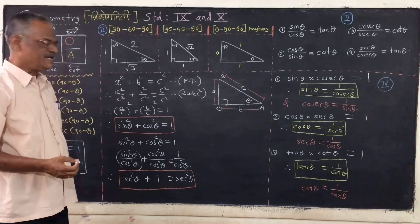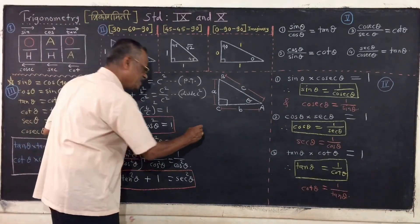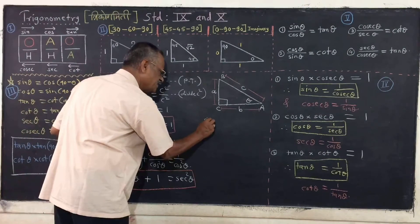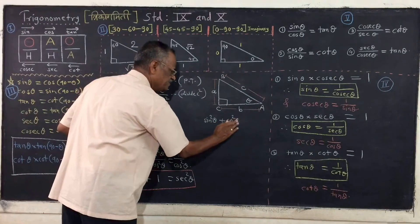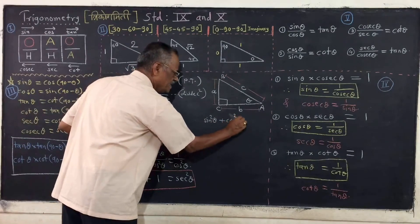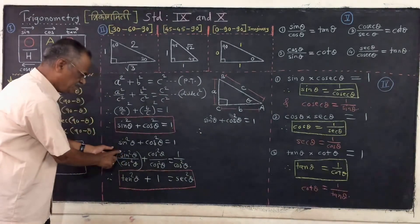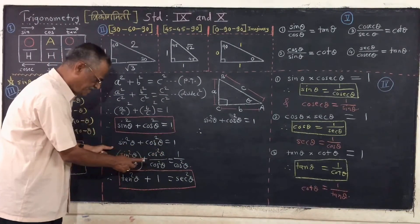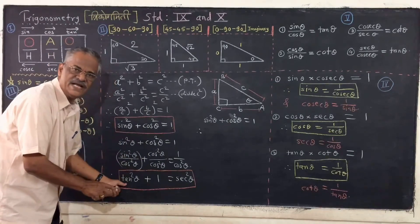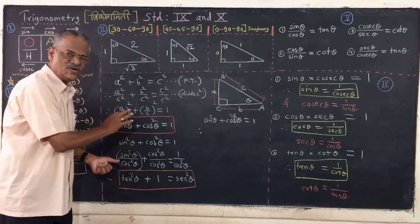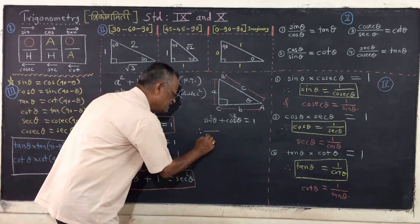And the third identity: by using the first identity — we have proved that sine squared theta plus cos squared theta is equal to 1. Now let us divide here by sine squared theta.